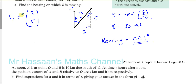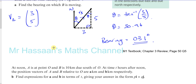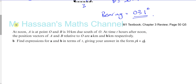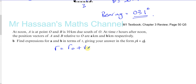Okay, that's part A done. Now for part B, we're told that at noon, A is at point O and B is 10 kilometres due south of O. At time T hours after noon, the position vectors of A and B relative to O are given. So we need to find the position vectors in the form pi plus qj. The position vector of a point is equal to its initial position plus its velocity times time.